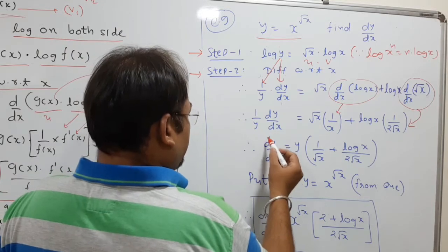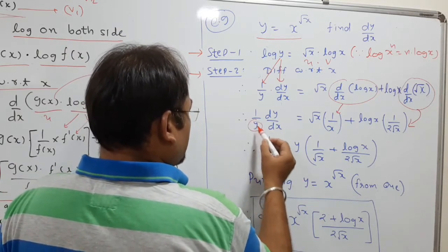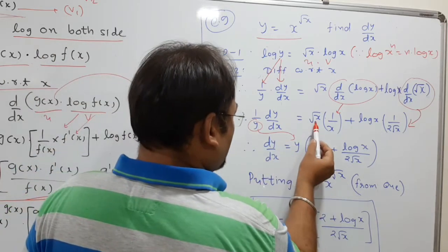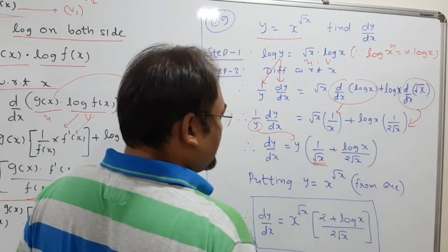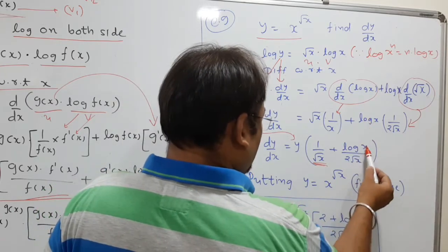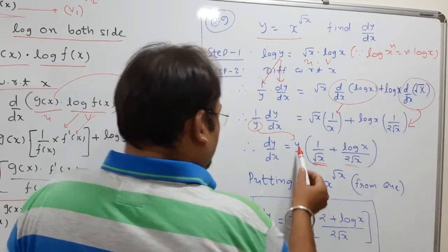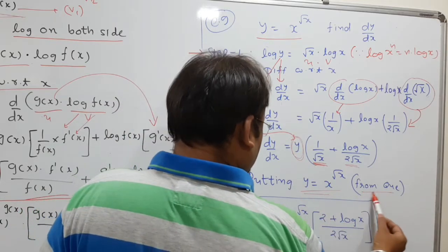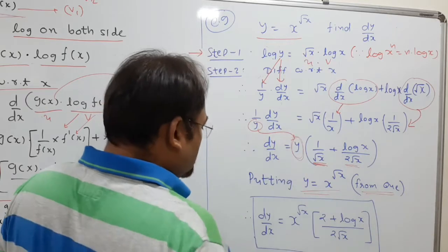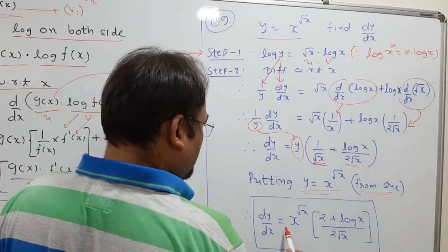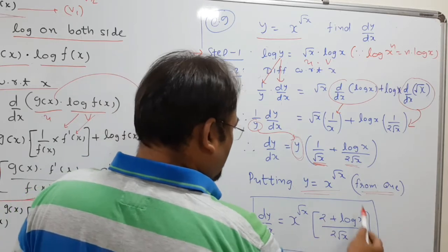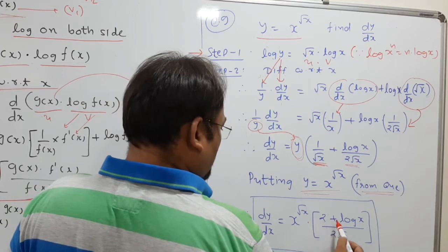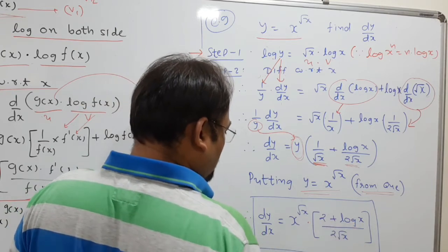Simplification: (1/y)·(dy/dx) = 1/√x + log x/(2√x). Taking LCM as 2√x gives (2 + log x)/(2√x). Substituting y = x^(√x), the final answer is: dy/dx = x^(√x) · (2 + log x)/(2√x).